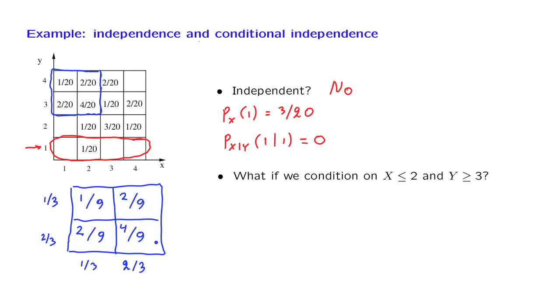So in this conditional blue universe, we do have independence. And the way that this was established was to check that the joint PMF factors as a product of marginal PMFs.